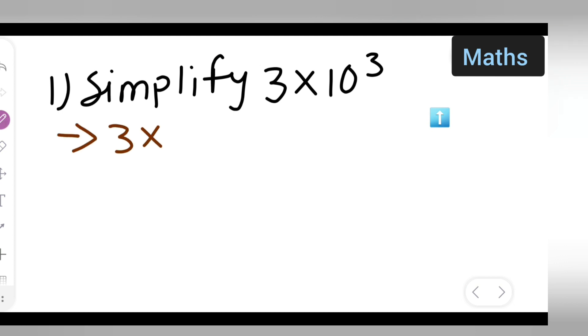First, write down 3 multiplied by 10 raised to the power of 3 as it is. The next step will be 3 multiplied by - now how many times 0 are there? 3 times, right? So I will have to write down 1000.